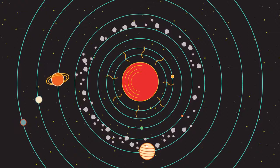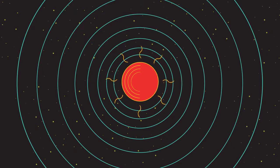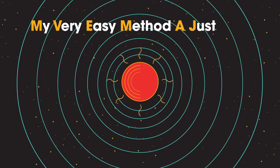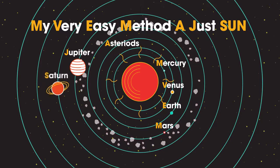Remembering their names in the right order can be tricky, so often we use a silly verse to help. One example is: My Very Easy Method Accelerates Just Speeds Up Naming - Mercury, Venus, Earth, Mars, asteroids, Jupiter, Saturn, Uranus, and Neptune.